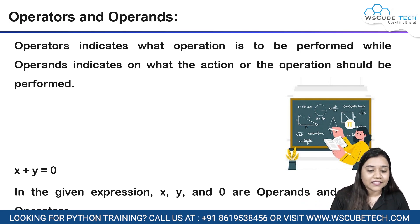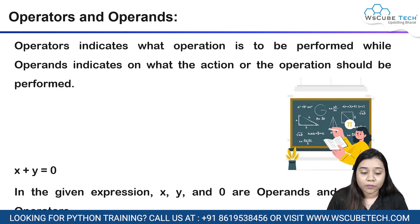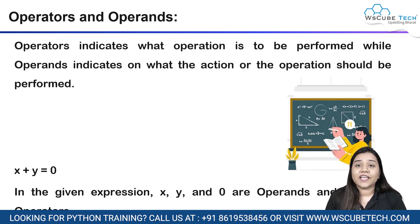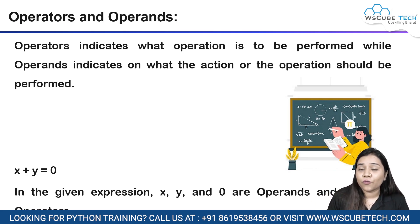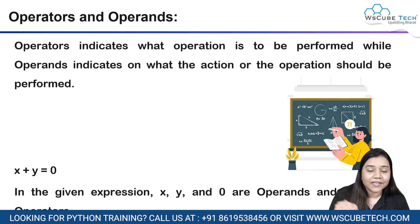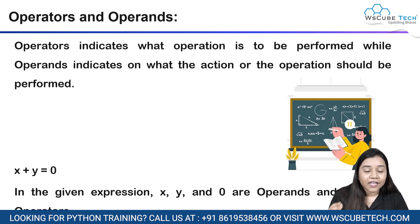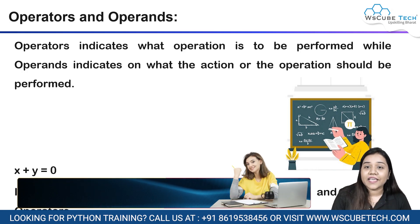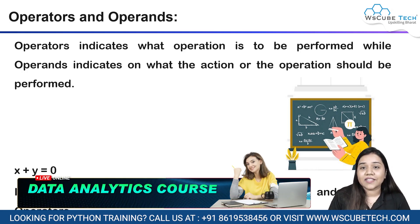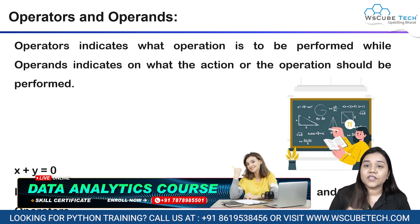So operands are the ones on which the action needs to be performed. On x, y, and 0, the action needs to be performed — and what action is being performed here is the plus and equals to action. That's why plus and equals to are operators, and x, y, and 0 are our operands.